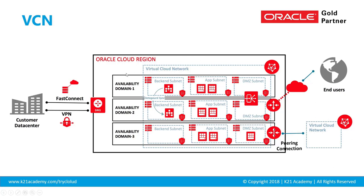Now let's look at the main topic — the networking components within Oracle public cloud. In the diagram, the outer dotted lines represent a virtual cloud network, which is specific to a region. Within the availability domain, you see a subnet. It's important to understand these concepts — VCN, availability domain, subnet, and region — before we go on to the networking concepts.